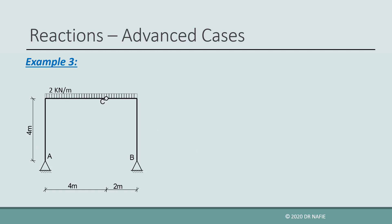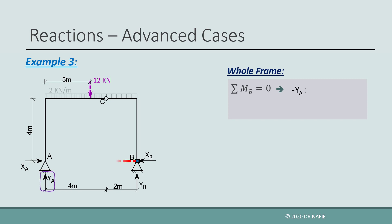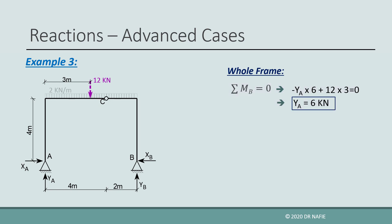Let us look at the third example. The shown frame has two hinged supports with two reactions each, making four unknown reactions. By looking at point B, we find that three reactions XA, XB, and YB pass through point B. So by taking the sum of moments about point B, these three reactions will not be included, and only one unknown YA will be left. We will convert the distributed load to an equivalent concentrated force of 12 kN. The moment equation about point B will include two terms: negative YA multiplied by 6 meters, and the 12 kN equivalent force multiplied by 3 meters. Solving the equation gives YA equals 6 kN.